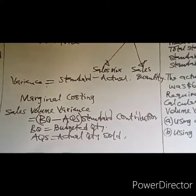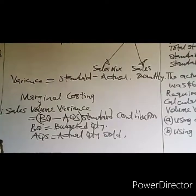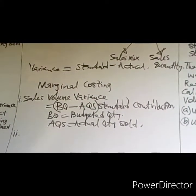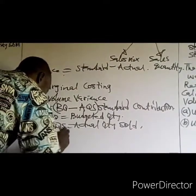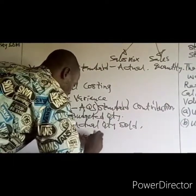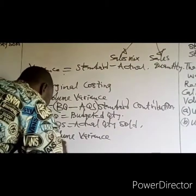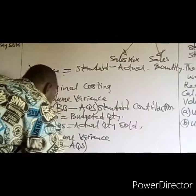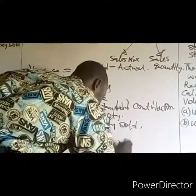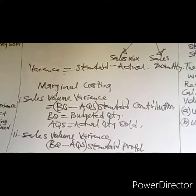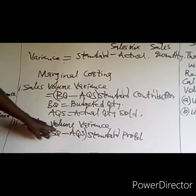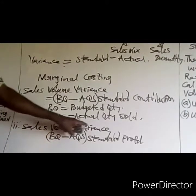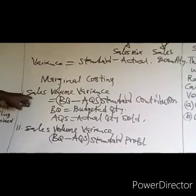The second school of thought is absorption costing. The question may ask you to calculate the sales volume profit variance, which is the budgeted quantity minus the actual quantity sold, multiplied by the standard profit. Where the marginal costing school of thought is to be used, we calculate the sales volume contribution variance.